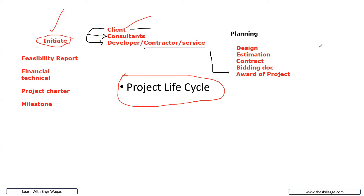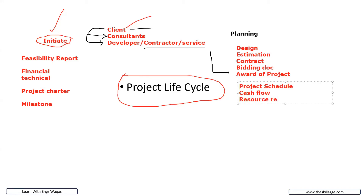After the project is awarded, within the planning phase, the contractor is going to produce a project schedule. You can relate how a project schedule is compiled using Primavera P6, based on the contract and agreement. From Primavera P6 you can also produce cash flow documents and resource requirement plans.